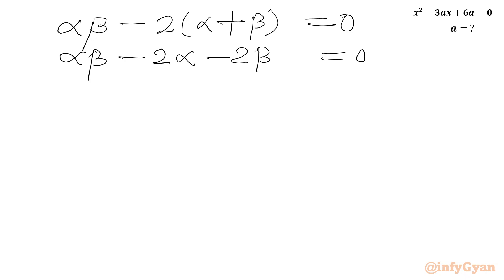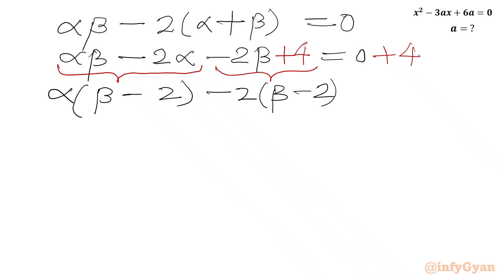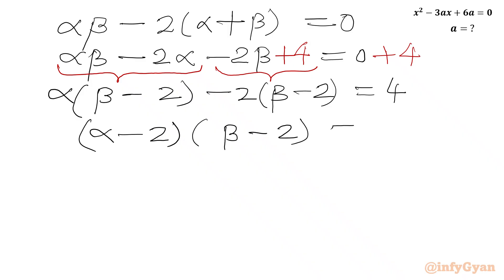Now I will add 4 to both sides. Taking alpha common from the first two terms and -2 common from the last two terms, we write alpha(beta - 2) - 2(beta - 2) = 4. Since (beta - 2) is overall common, we get the factorization: (alpha - 2)(beta - 2) = 4.